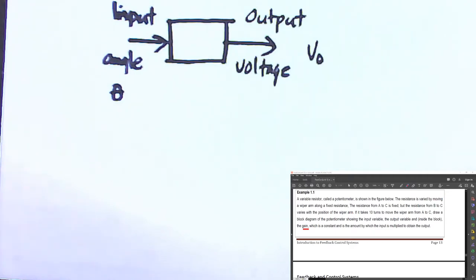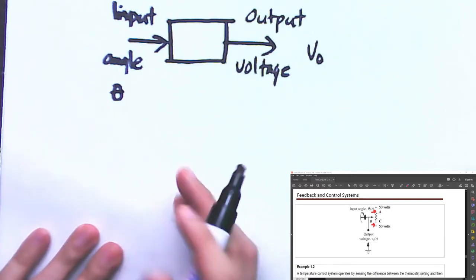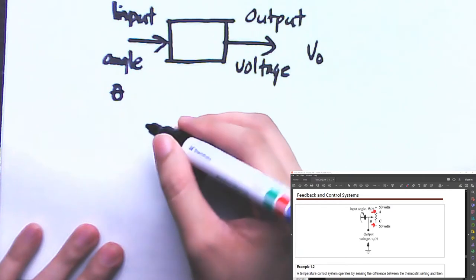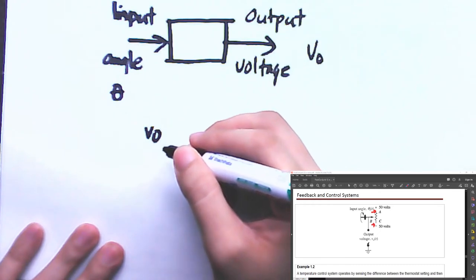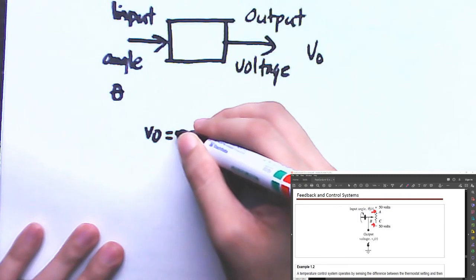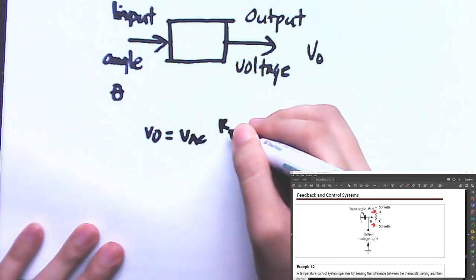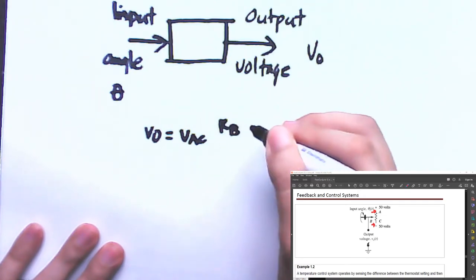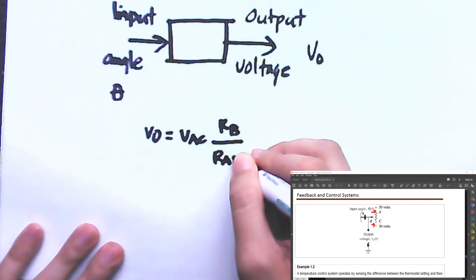Let's look at our diagram. Since this is a voltage divider, we can deduce that the voltage output — which is basically the voltage between B and the ground — is basically V_AC times the resistance of the potentiometer when the pointer is at B, divided by the overall resistance of the potentiometer, found by traversing the entire length.